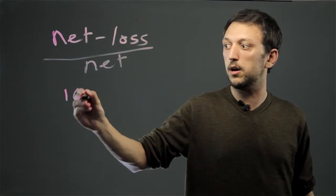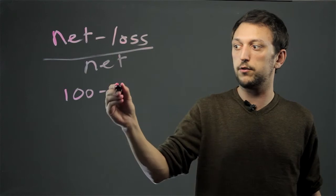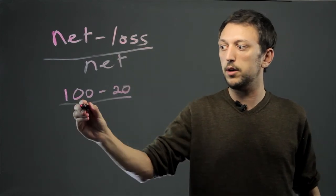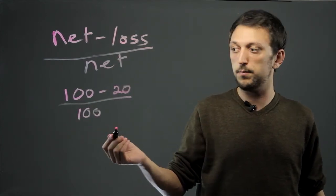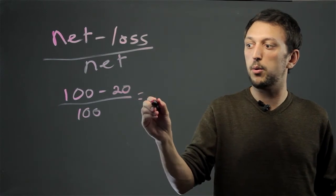So for example, if we netted 100, we lost 20, and we divided by 100, that would be 0.8.